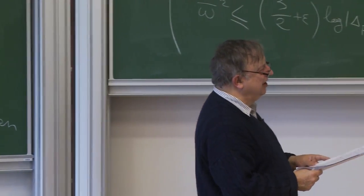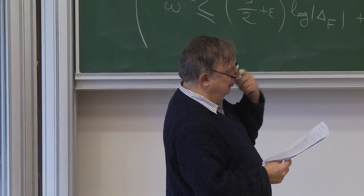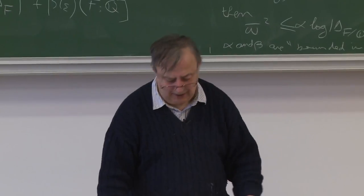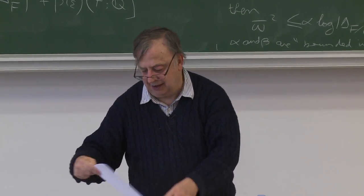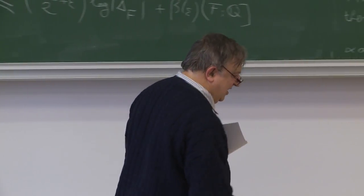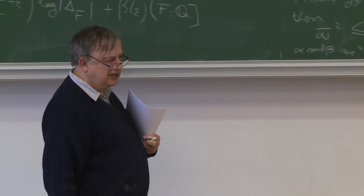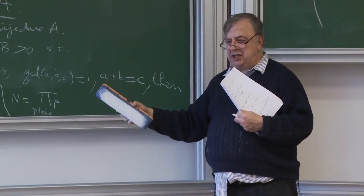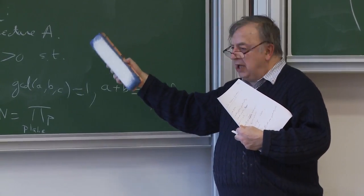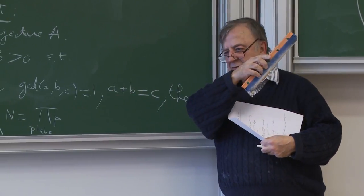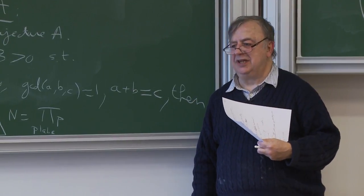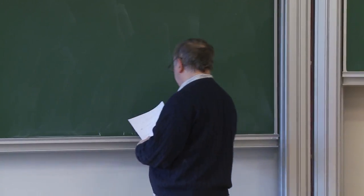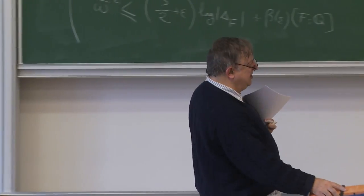Starting next week I will explain how one can prove that conjecture B implies CRM-B. I will take inspiration from the Moret-Bailly paper, which proves that conjecture A implies CRM-A, and adapt it. So our goal is to prove CRM-B: assuming conjecture B, prove ABC.